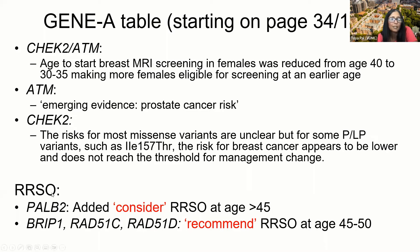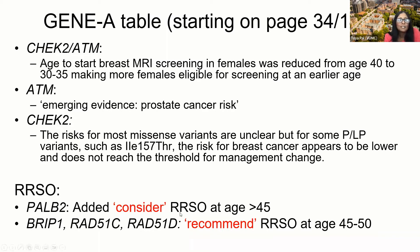For risk-reducing salpingo-oophorectomy (RSO) for PALB2, we added "consider RSO at age over 45." This is consistent with the PALB2 practice resource put forth in the last couple of years, where the first author is Mark Tishkowicz, and where we made the same sort of recommendation. This "consider" is different from the recommendation we make for BRIP1, RAD51C, and RAD51D, where we say "recommend RSO at age 45 to 50."